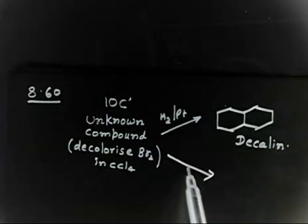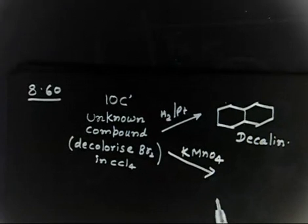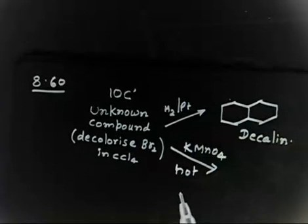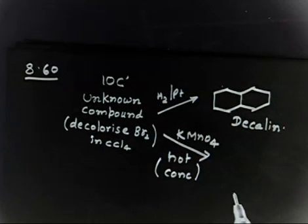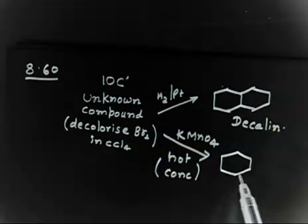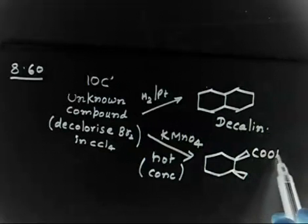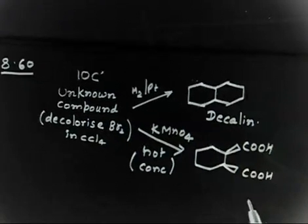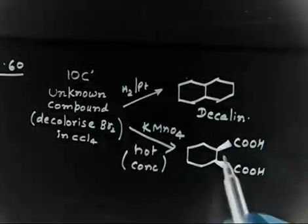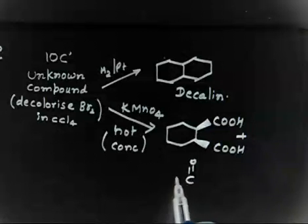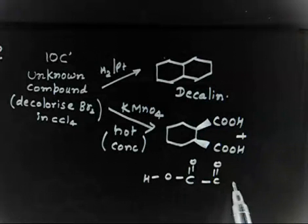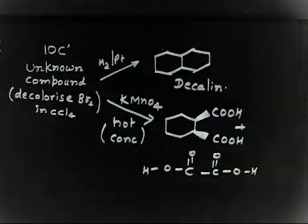The next reaction: if we treat the same compound with hot concentrated KMnO4 solution, it gives cis-1,2-cyclohexane-1,2-dicarboxylic acid. The two COOH groups are cis — both on the same side of the ring, both above the plane of the paper. This reaction also gives one more product: oxalic acid (COOH-COOH).